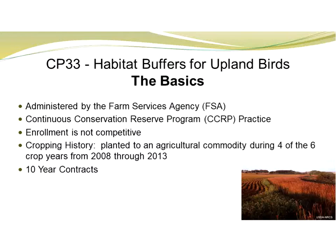Before getting into the specifics of the CP33 habitat practice, I wanted to provide a little history of how CP33 got started. In response to quail declines and the grassland bird declines, back in 1996 the National Bobwhite Tech Committee along with several other wildlife partners submitted a proposal to the Farm Services Agency (FSA) to create a new continuous CRP buffer program. It was in 2004 that FSA started the CP33 Habitat Buffers for Upland Birds through a pilot across 35 states, with FSA allocating 250,000 acres. It had a very successful pilot season.